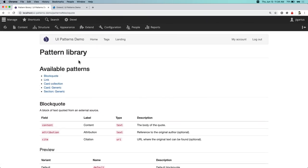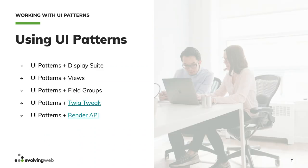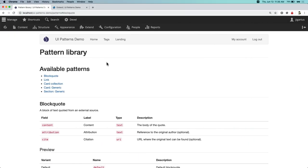Now I'll show how to use a pattern. To put it to use, we enable the helper bridge modules. The first example is how to use UI patterns with Display Suite. I'll configure the article content type so that the teaser view is rendered using a card. When you go to a views page with a list of article teasers, you will see a list of cards. No code for this — you define the pattern and the rest is just the Drupal admin UI. I'll go to Articles, then Manage Display.